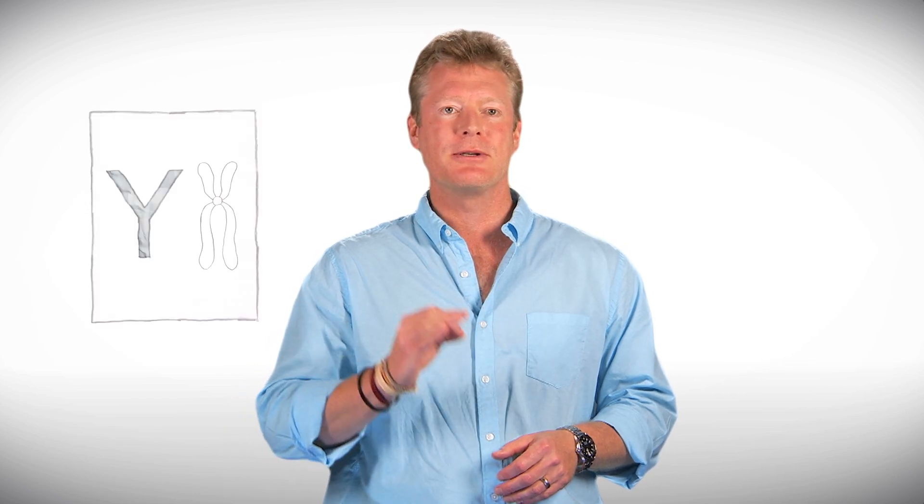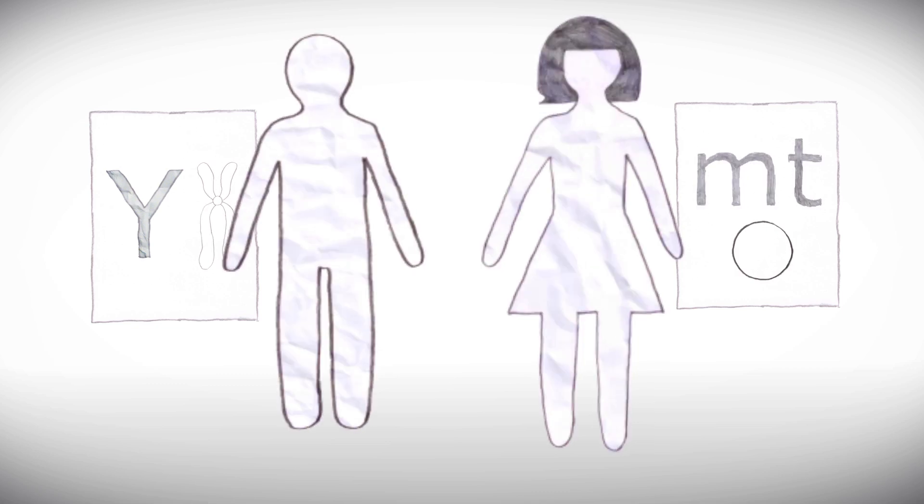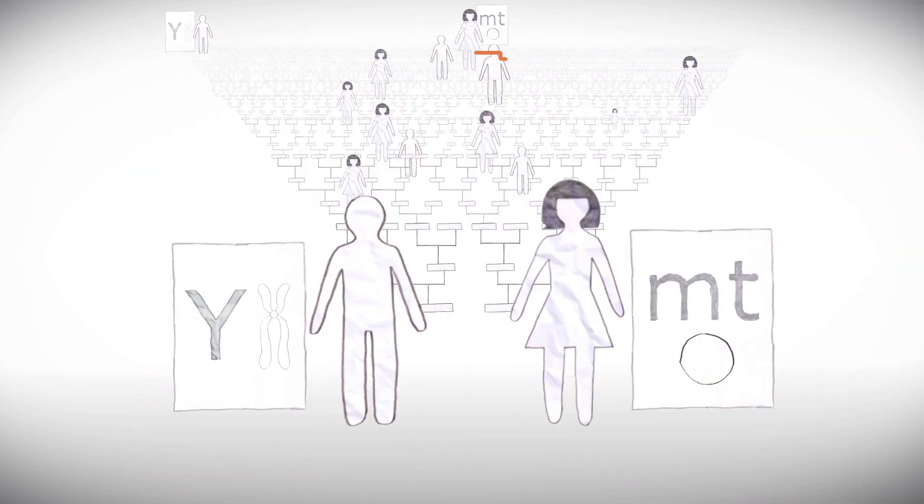So by looking at markers on the Y chromosome and mitochondrial DNA, we can connect people alive today to ancestors that lived tens of thousands of years ago.